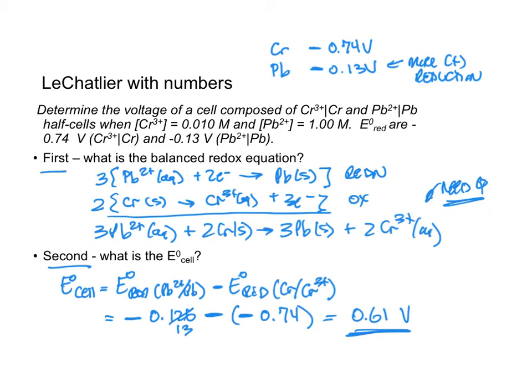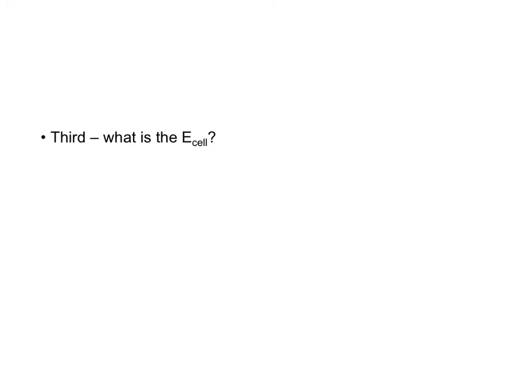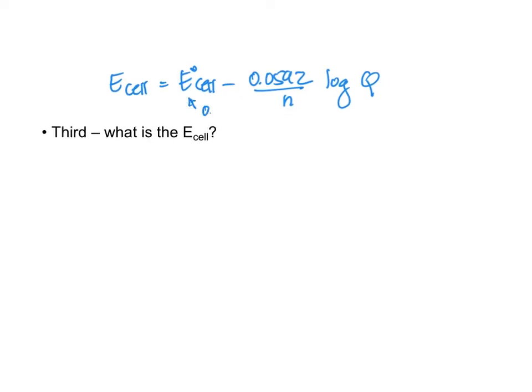So all of this was the beginning of the chapter. Now that we've done this, we're going to go on and put it into the Nernst equation. So third, what is the E of the cell? E of the cell will be E° of the cell minus 0.0592 over n log of Q. Let's just draw some arrows before I write the equation in. Our E° of cell is going to be 0.61. Our n value, that's going to be a six.